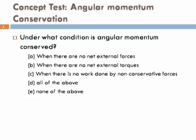And now let's do another concept test. Get your mobile phones ready. Under what condition is the angular momentum conserved? A: when there are no net external forces on the system. B: when there are no net external torques on the system. C: when there is no work done by non-conservative forces. D: all of the above. And E: none of the above. Key in your answers using your mobile phone.